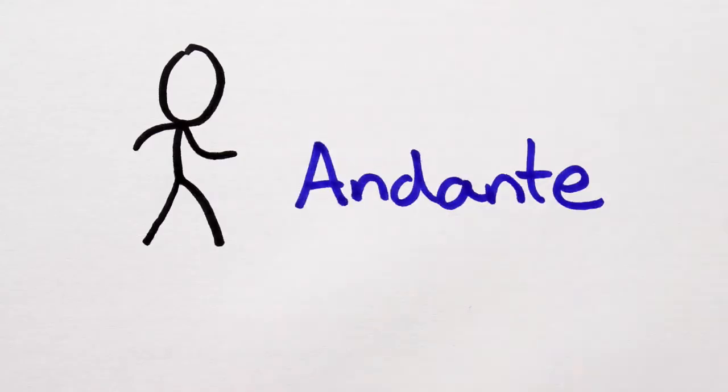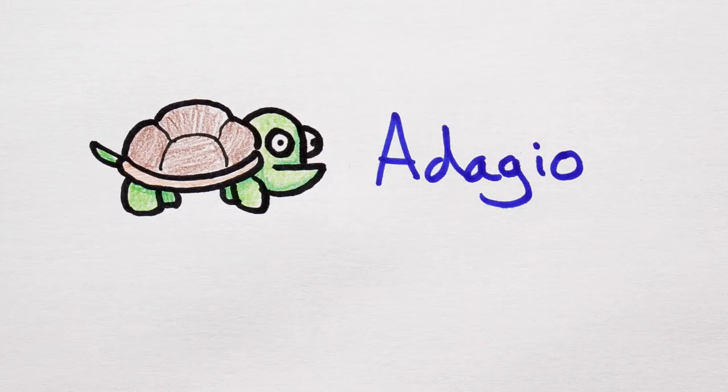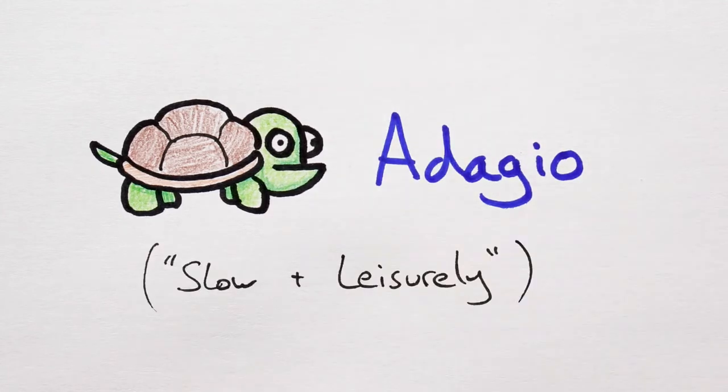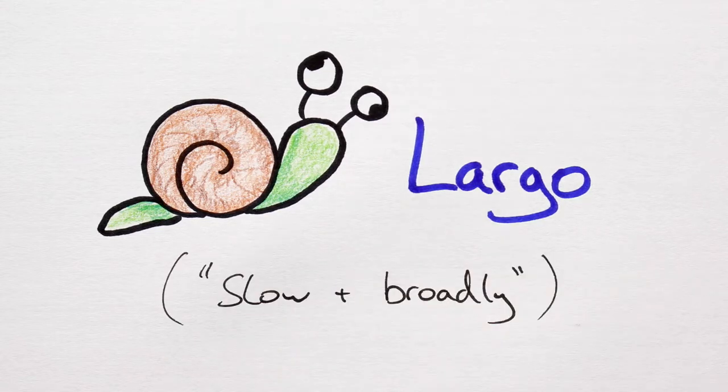Now, andante means the music should be at ease, played at a walking pace. Adagio tells us to play slow and leisurely. And largo tells us to play slower again and broadly.